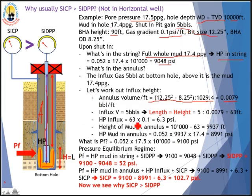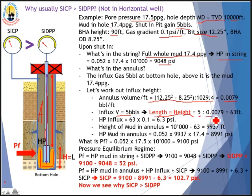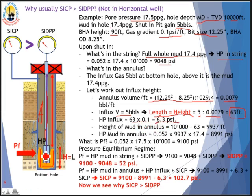In the annulus, we have gas influx at the bottom and mud above it. We work out the annulus volume per foot using the classic formula — it equals 0.0079 bbl/ft. We have a pit gain of 5 barrels. Since this is a vertical well, height equals length of the influx: 5 barrels ÷ 0.0079 bbl/ft = 63 feet. The hydrostatic pressure of this gas influx is 63 ft × 0.1 psi/ft = 6.3 psi.